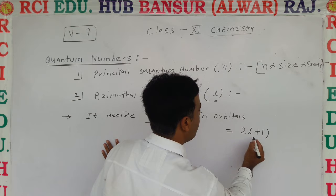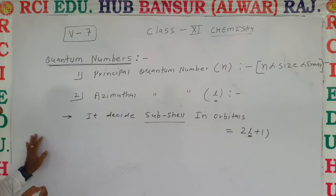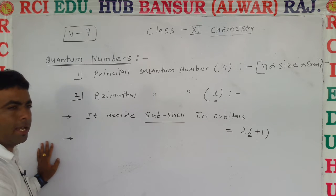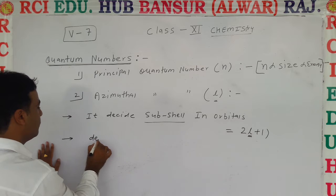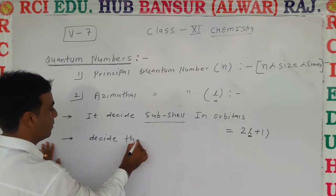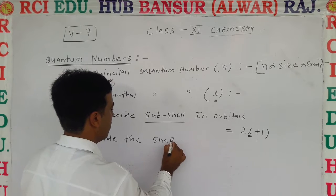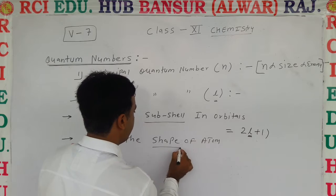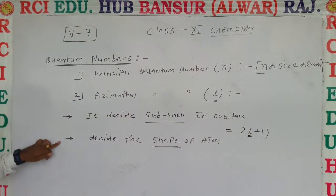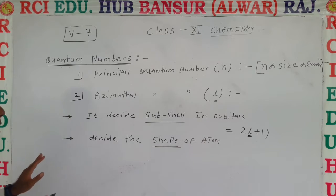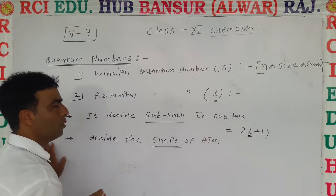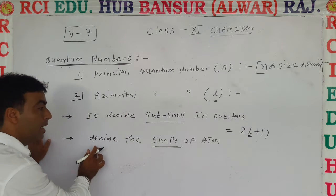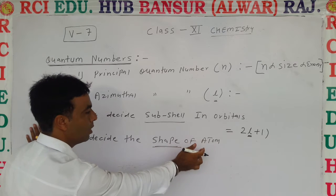In the 2l + 1 formula, the value of l decides the number of sub-cells. Also, the azimuthal quantum number decides the shape of the orbital — that is its main feature. So the main features are: it determines the number of sub-cells and also decides the shape of the orbital.